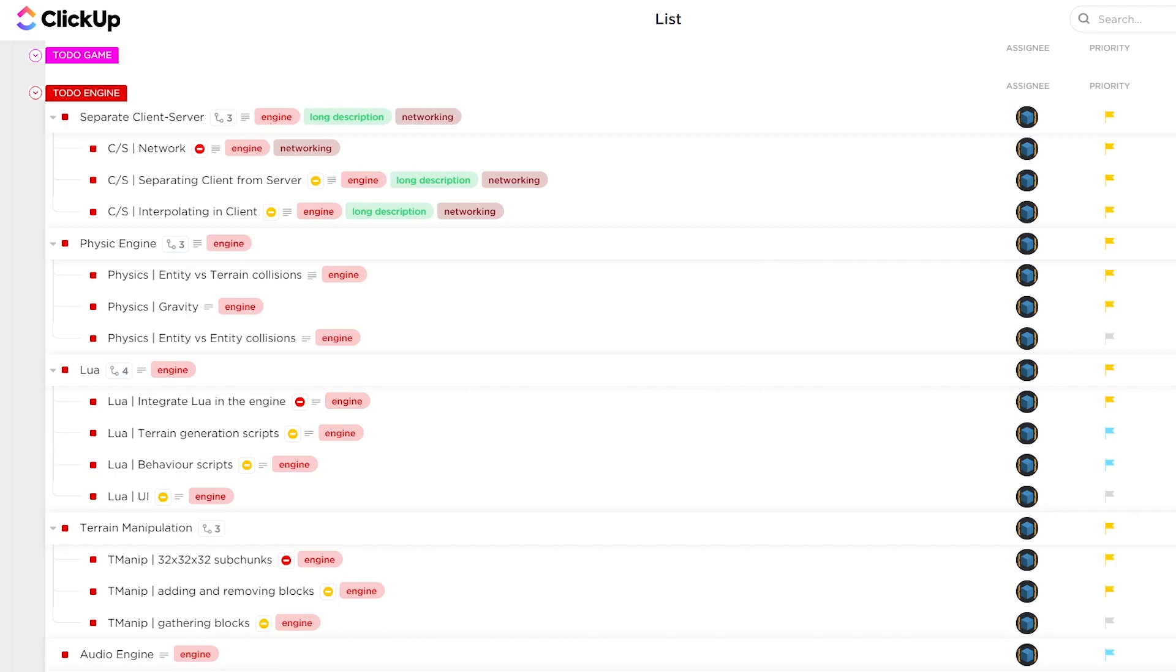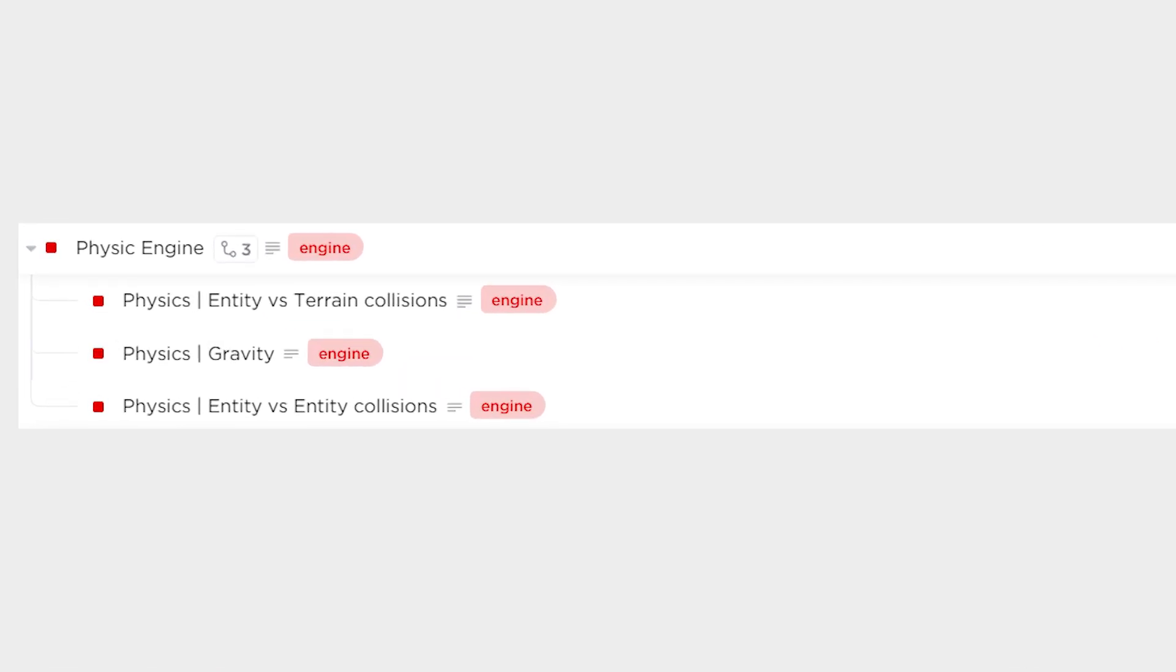In the roadmap, I separated collisions into three parts: entity vs terrain, gravity, and entity vs entity. Let's first focus on entity vs terrain.